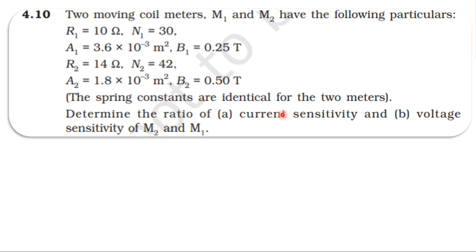Find the current sensitivity and voltage sensitivity ratio of M2 to M1. First of all, the angle of deflection is equal to B I N A divided by the spring constant K.